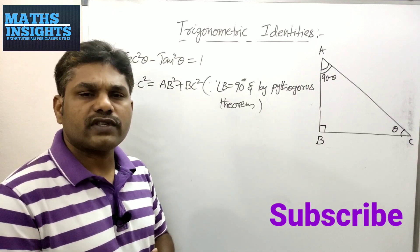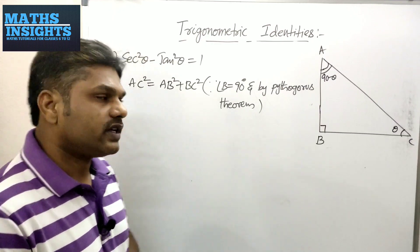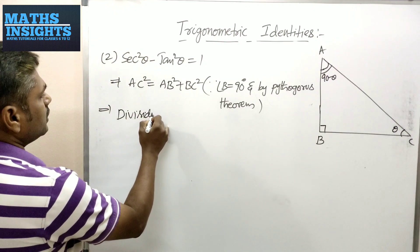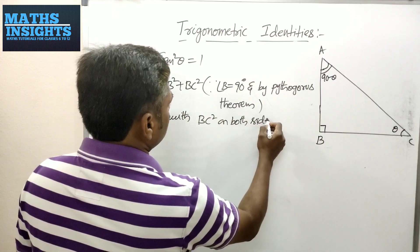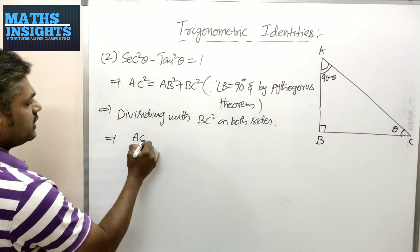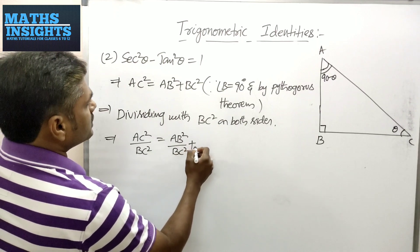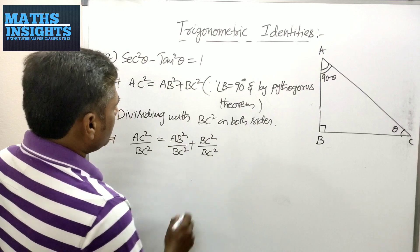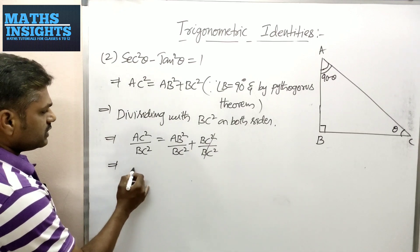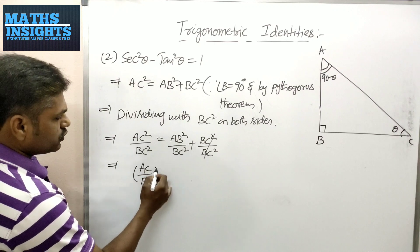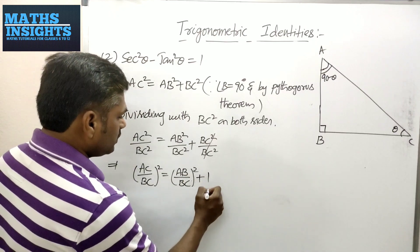Instead of dividing by AC² as we did in the previous identity, this time we divide both sides of the equation by BC². Dividing by BC² on both sides gives: AC²/BC² = AB²/BC² + BC²/BC². Cancelling BC²/BC² gives 1 on the right. This becomes: (AC/BC)² = (AB/BC)² + 1.